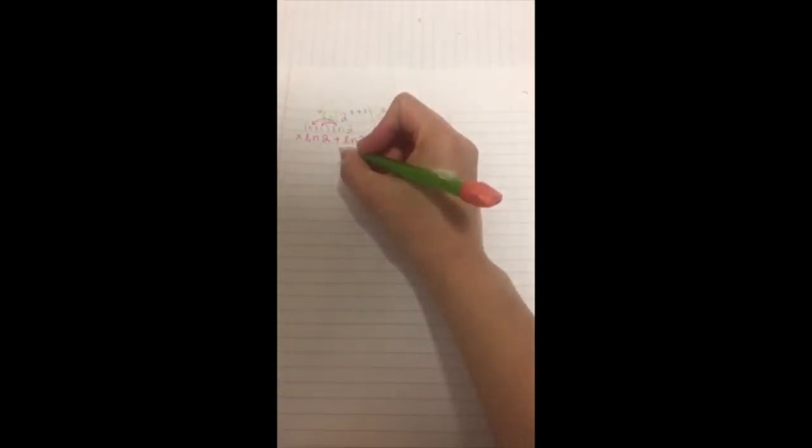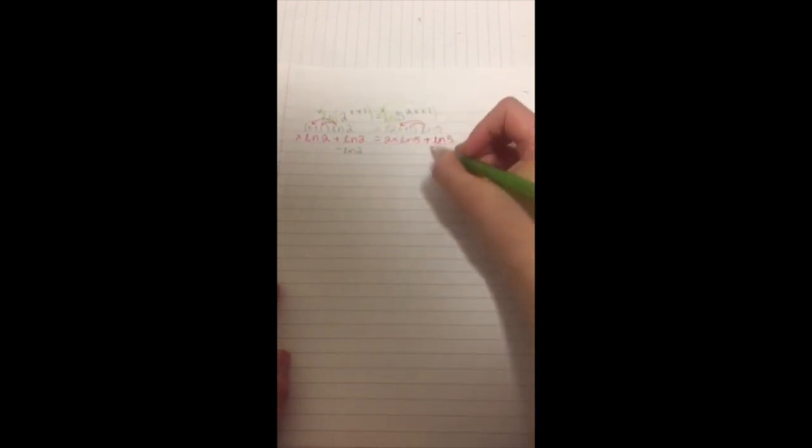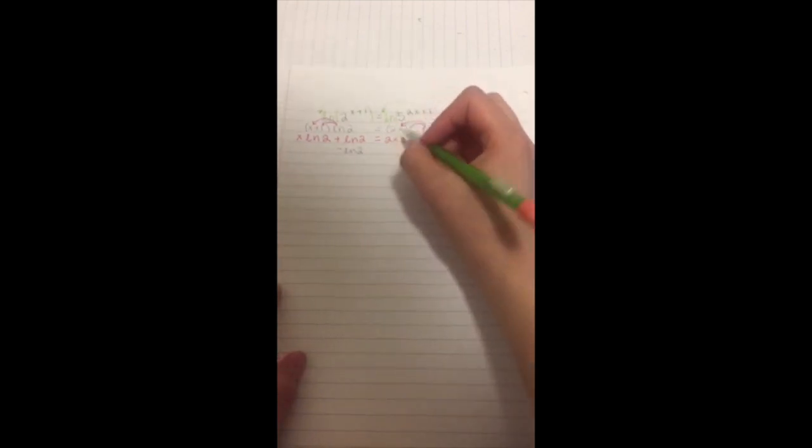So it would be x natural log of 2 plus the natural log of 2 equals 2x natural log of 5 plus Ln5. Now the fourth step is to put like terms on each side. So on this side, we would have to subtract the natural log of 2 on that side. And then take this part and put it on this side.